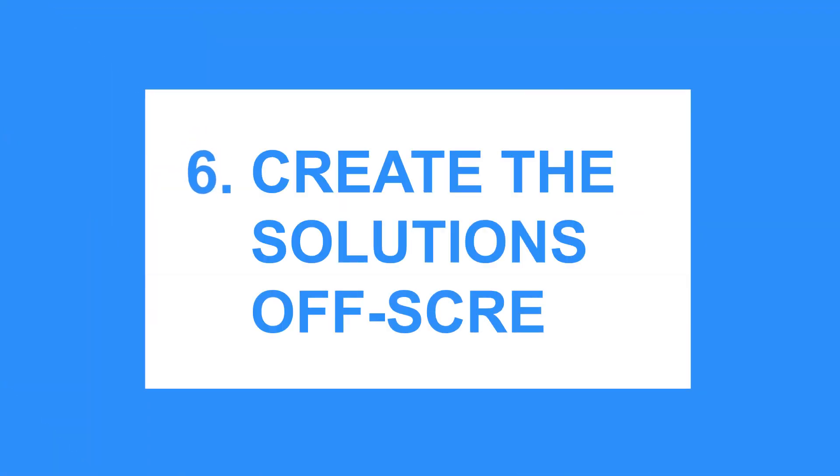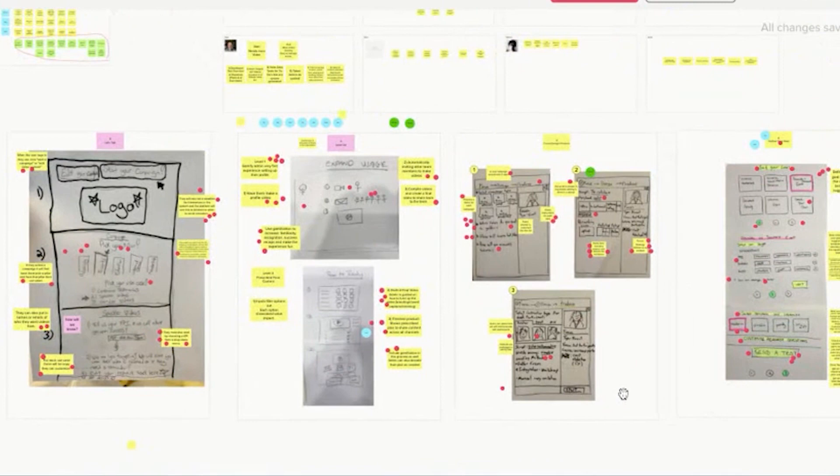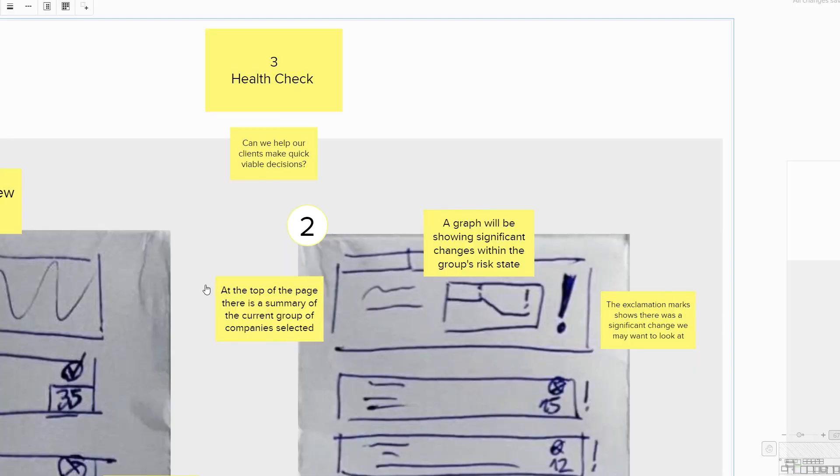Tip number six: create the solutions off screen. You want to create as much of the exercises off screen as possible because people really get tired of being on screen all the time. The solutions part is a great time to go off screen — everyone goes into their own corner and sketches their solution. Similar to the regular sprint, ask them to take A4 or letter-sized paper and create a three-part solution. The difference is they'll photograph those solutions and upload them to a gallery you've created in the mural, then annotate their solutions with post-its inside the mural.